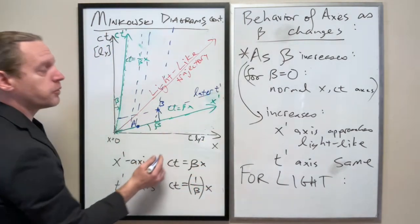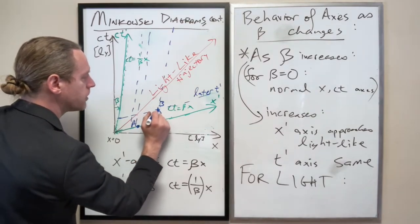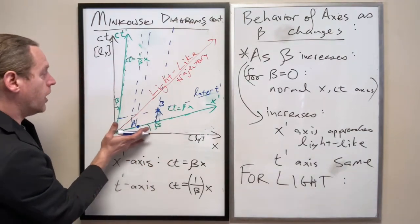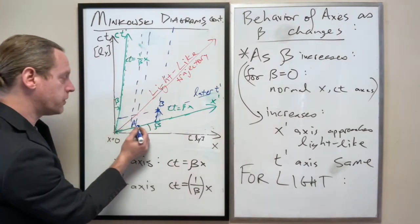So specifically, this observer, oops, I did that slightly wrong. This observer would observe a positive time difference between a and then b.